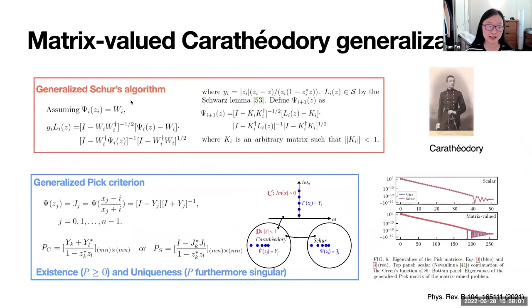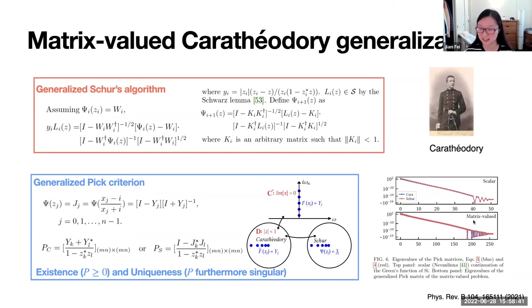There is also a generalized Schur algorithm and generalized Pick criterion as matrix-valued generalizations of the Nevanlinna analytic continuation. In the generalized Schur algorithm, the first step again reduces a problem with m nodes to m-1 nodes. In the Pick criterion, we use only the input sampling data to construct matrices; by their positive semi-definiteness and singularity, we can determine whether we have a class of solutions, a unique solution, or no solution. The matrix-valued Pick matrix spectrum has an almost identical distribution to the scalar case.